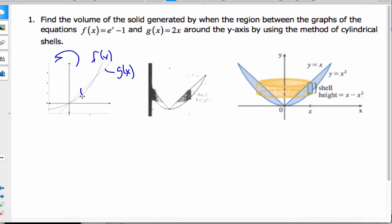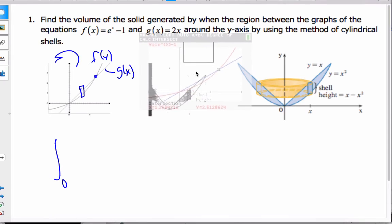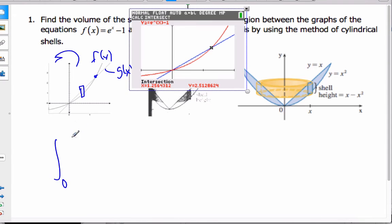Okay, so I'm going to put my little rectangle parallel to the axis of rotation, and I'm going to go from 0. This point of intersection here is, if I go back to my calculator and find the intersection point, there is my intersection point, 1.256.